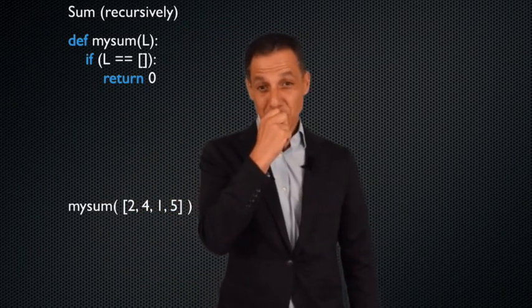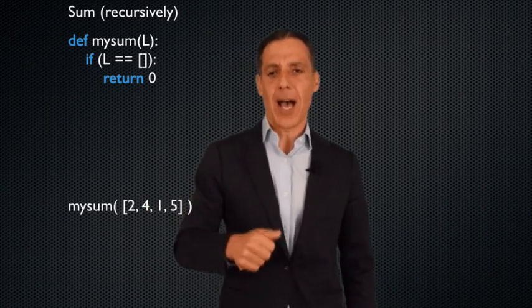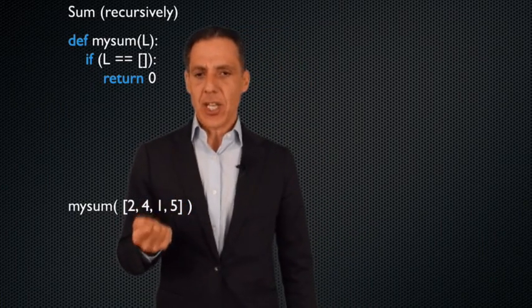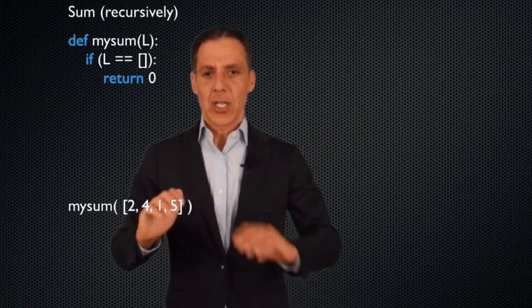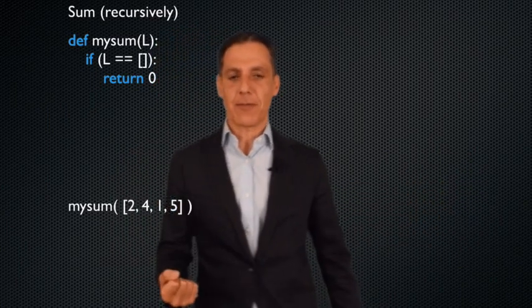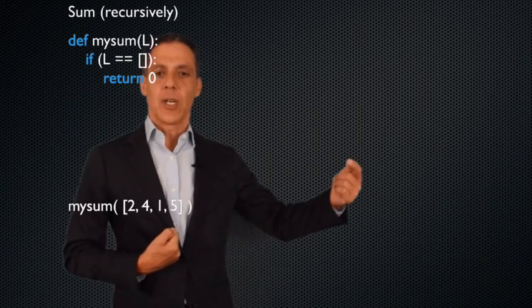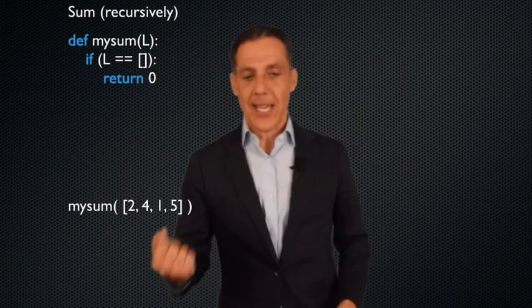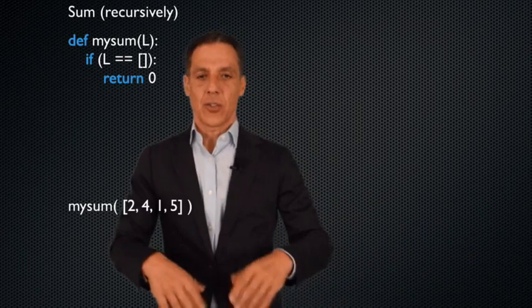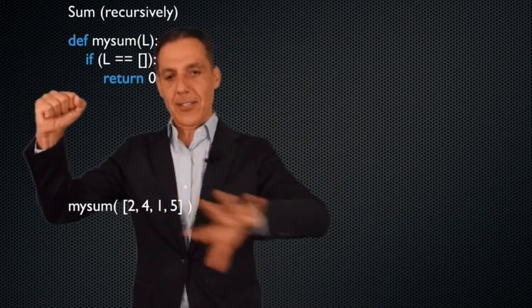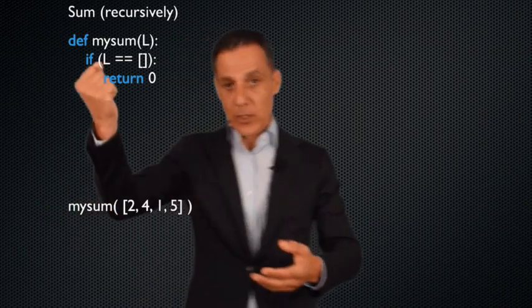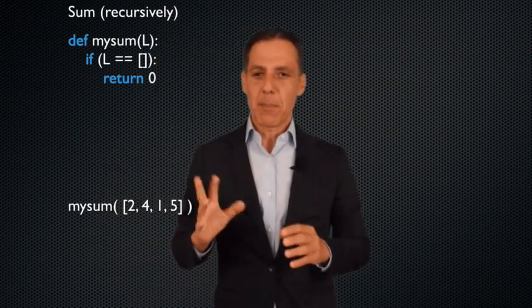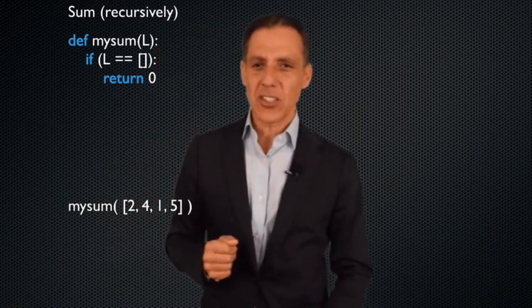What's the recursive definition? Well, what does it mean to sum up 2, 4, 1, and 5? One way to think about it is the sum of all these elements is 2 plus whatever the sum of the rest of the list is. So I can just peel off that first element, hold on to it, and add it to my sum of [4, 1, 5]. That sounds a lot like factorial — N factorial is N times whatever the answer is for everything else. Instead of decrementing a value, I'm taking one element off the list and summing everything else. I'm going to peel off that first element and add it to the recursive call of everything else.